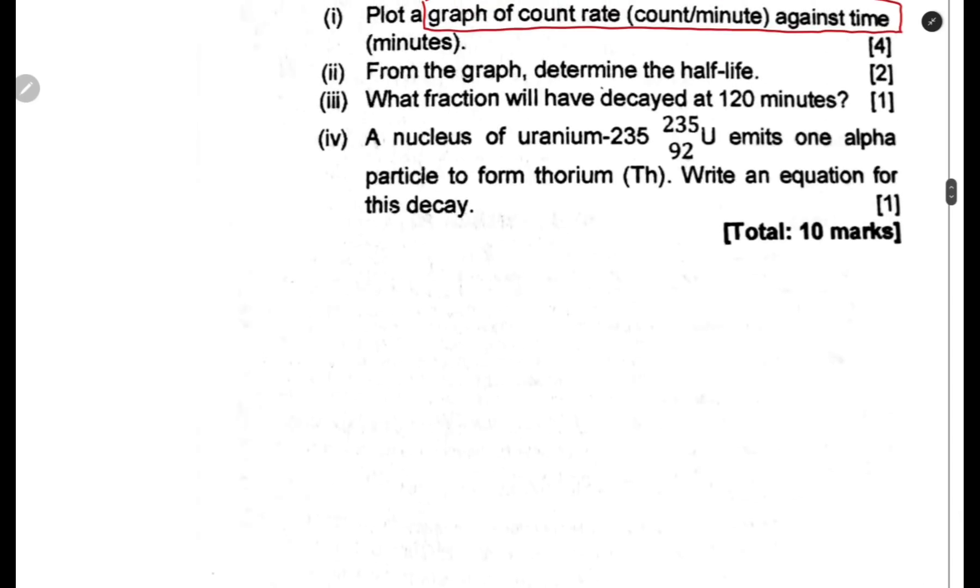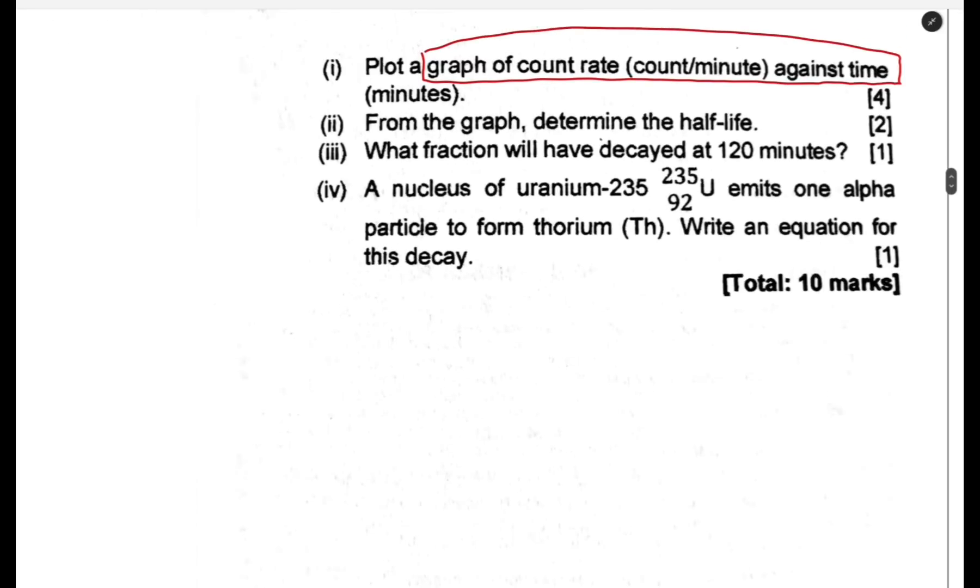A nucleus of uranium-235 emits one alpha particle to form thorium Th. Write the equation for this decay. From my prediction, I mentioned you need to know how to write the decay equation. This is alpha involved. The general equation is: when a substance decays by emitting an alpha, the mass number reduces by four, the atomic number reduces by two, plus helium.